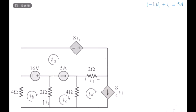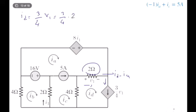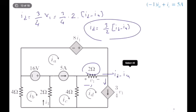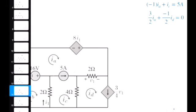Now let's deal with iD. iD is technically the current in this direction, and the current source is also supplying current in the same direction, so iD equals 3/4 · v1. v1 is the voltage drop in this direction, and the current in that branch is iD minus iA. So iD = (3/4) · 2 · (iD − iA), which simplifies to iD = (3/2)iD − (3/2)iA. Our second equation is therefore: (3/2)iA − (1/2)iD = 0.